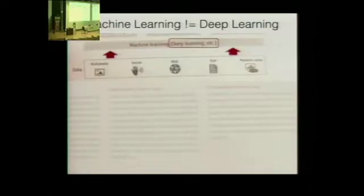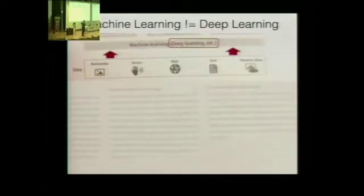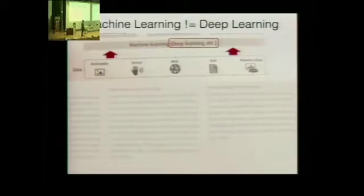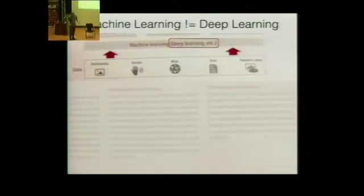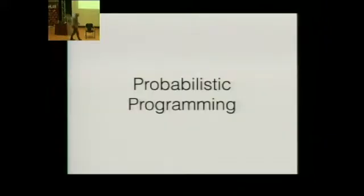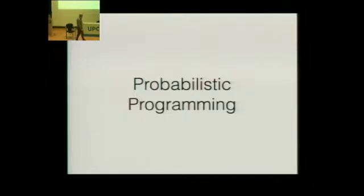I was recently asked to go to Japan to represent the UK as an AI and machine learning expert. One of the corporations we visited had their media and design brochures of what they can offer, and their impression of what machine learning is today was: machine learning equals deep learning. There is much, much more to machine learning than deep learning, and one of the most interesting things coming up in the field right now is probabilistic programming.